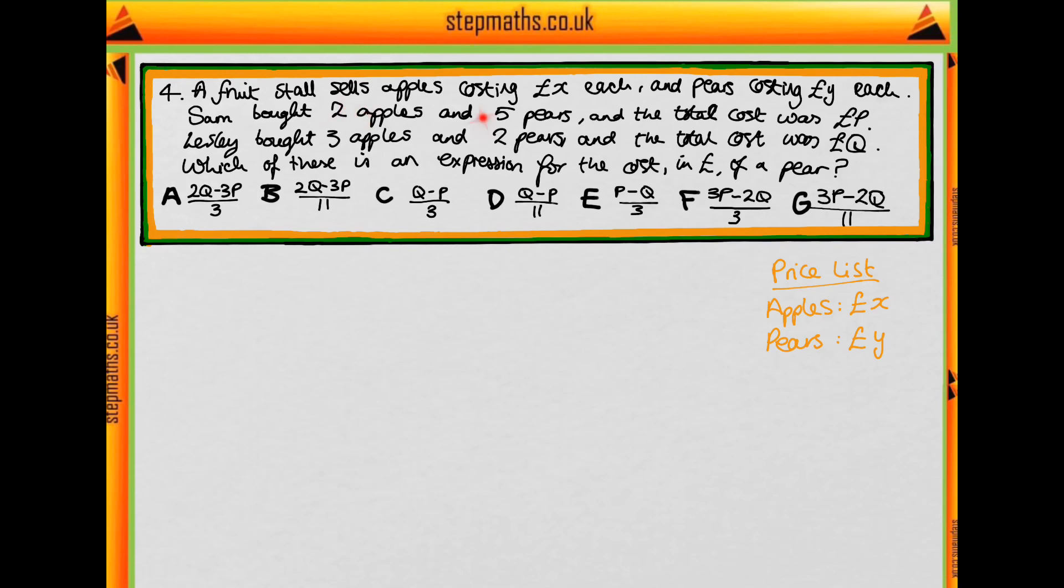So what we're going to do is write out two equations, one for Sam and one for Leslie, and then solve them simultaneously to find Y, the cost of a pear. So see if you can write out two equations, one for Sam, one for Leslie, for what they bought.